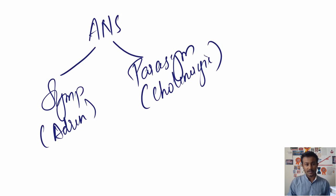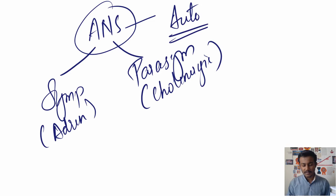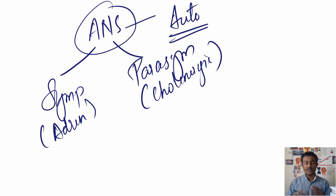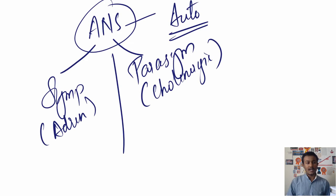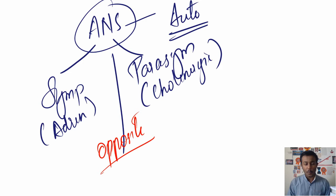So first off, what is the autonomic nervous system? It's an involuntary nervous system — a part of the nervous system that deals with your involuntary actions, mainly your heart rate, lacrimation, digestion, urination, and so on. It's the autonomic part of the body, and it has two parts: sympathetic and parasympathetic. Both of them are exact opposites of each other.